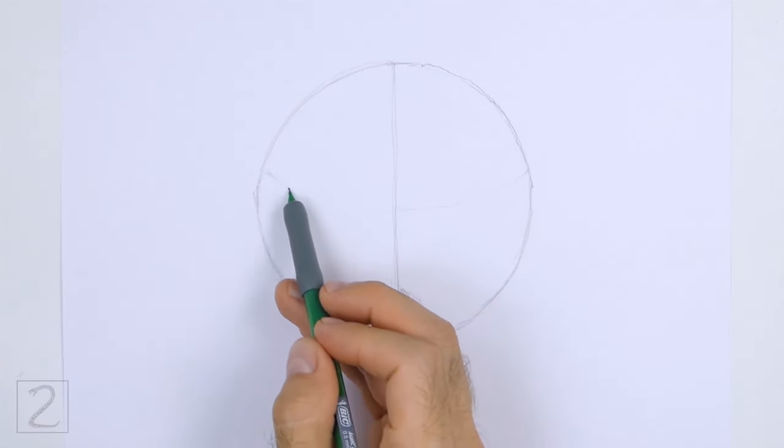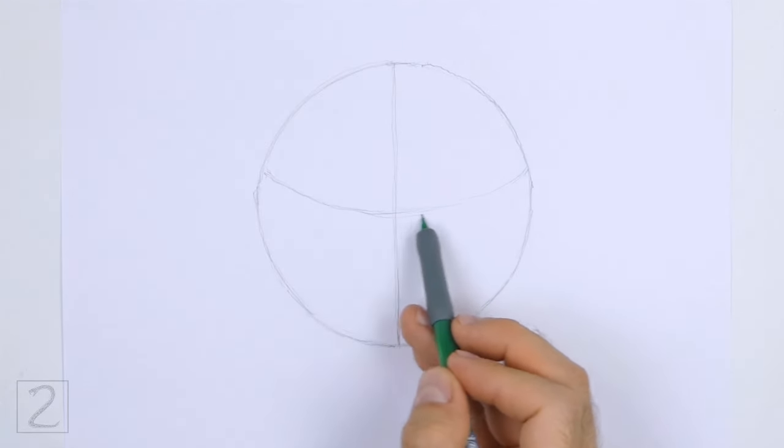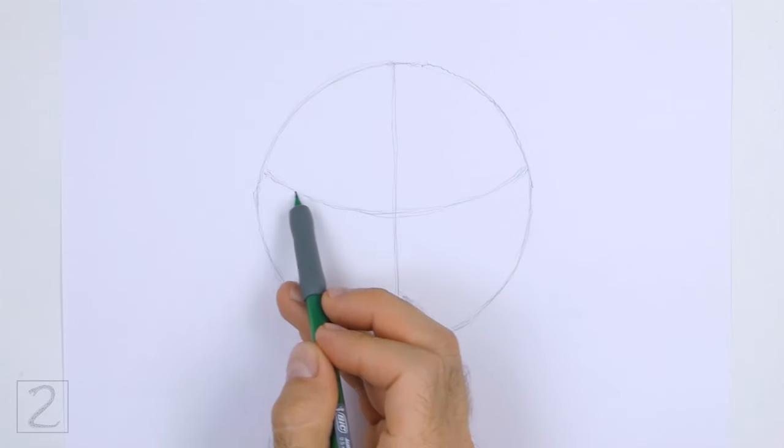Draw a curved horizontal line for another construction guide. Place this line slightly higher than the center of the circle.